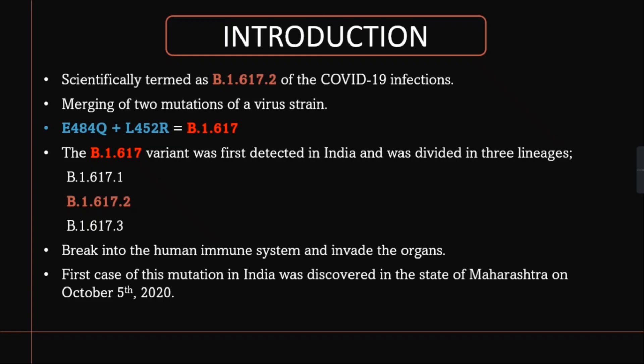That triple mutant is scientifically termed as B.1.617, and this B.1.617 category is divided into three lineages. This B.1.617 variant originated in India and is further divided into three lineages: B.1.617.1, B.1.617.2, and B.1.617.3.